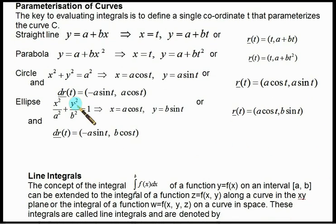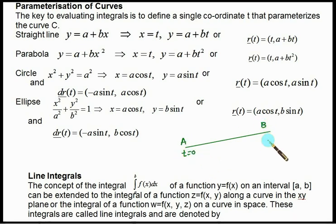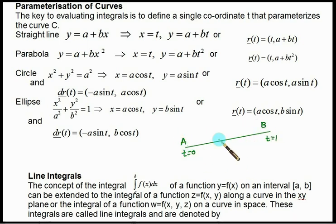For a straight line, y is equal to a plus bx. In that case, put x equal to t, then automatically y will become a plus bt. Suppose we have a point a and b — at parametrization we are done. In the line, we know that the start point is t equal to 0 and end point is t equal to 1. If you are given two coordinates, you can use this technique if you are not given the equation of the line.